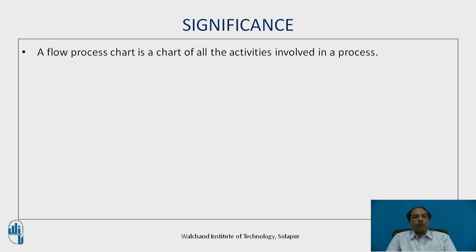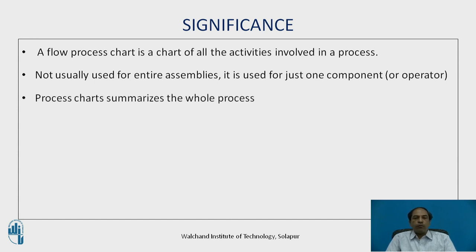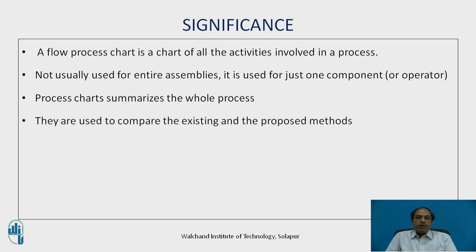The significance of the flow process chart is that it is a chart of all activities involved in the process. It is not usually used for entire assemblies; it is generally used for one component or a single operator. The process chart summarizes the whole process from start to end. These are used to compare the existing and proposed method — we draw the flow process chart for the existing method, analyze it, and reduce unnecessary movements or unnecessary distance during the process.